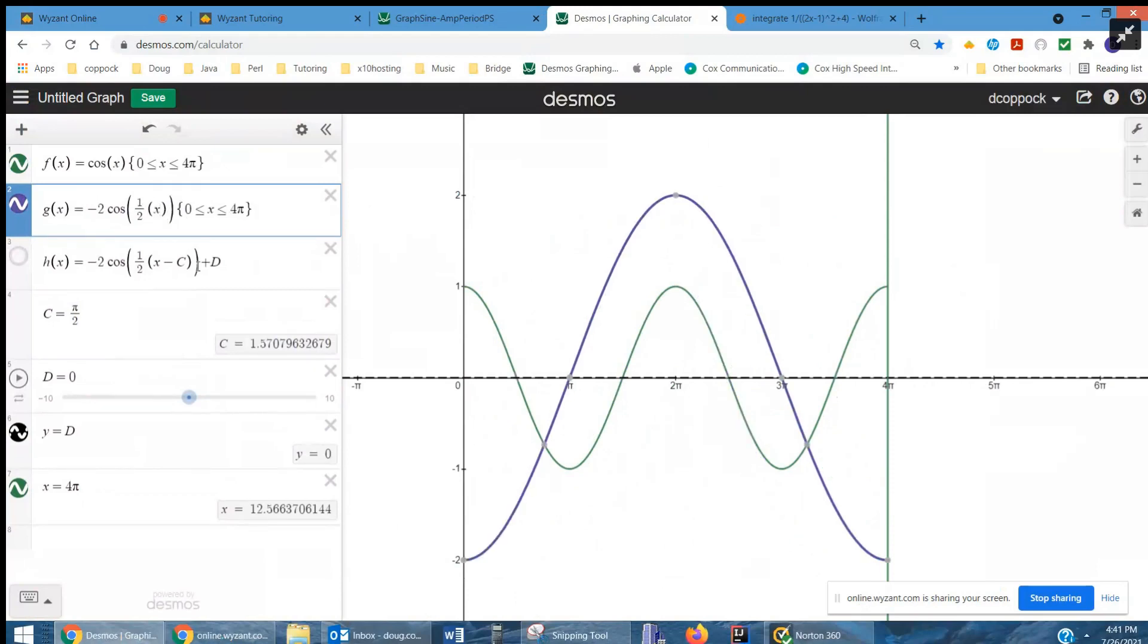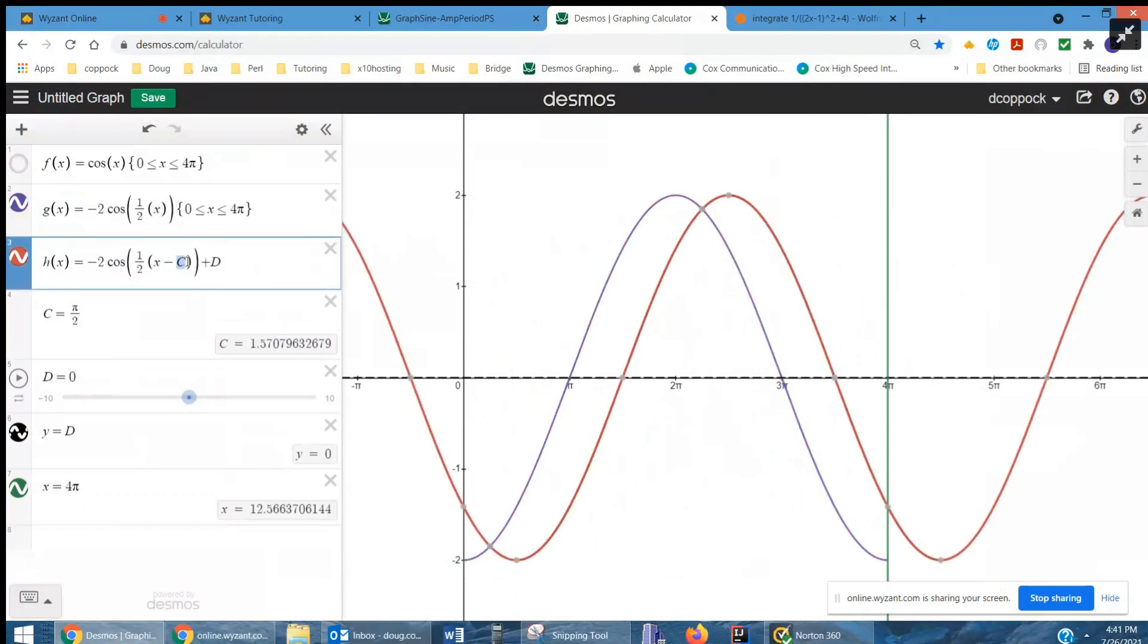I'm going to graph the original and then also disable the standard cosine function. Here's h(x), which has this phase shift of π/2, and there you can see it. This point went from 2π to 5π/2—I added π/2. Same thing here: started at π, ended at 3π/2. Phase shift π/2 to the right.